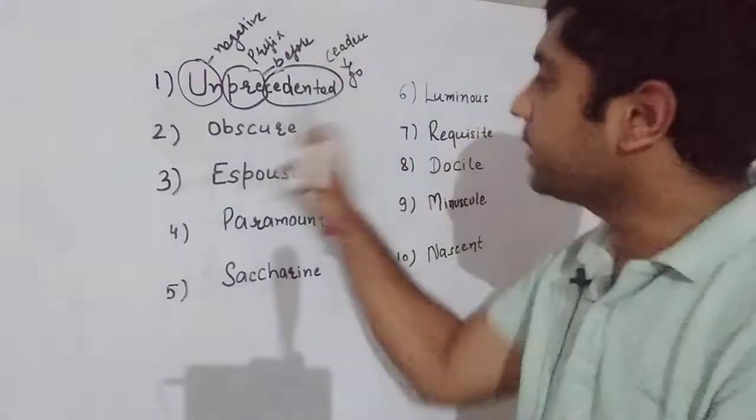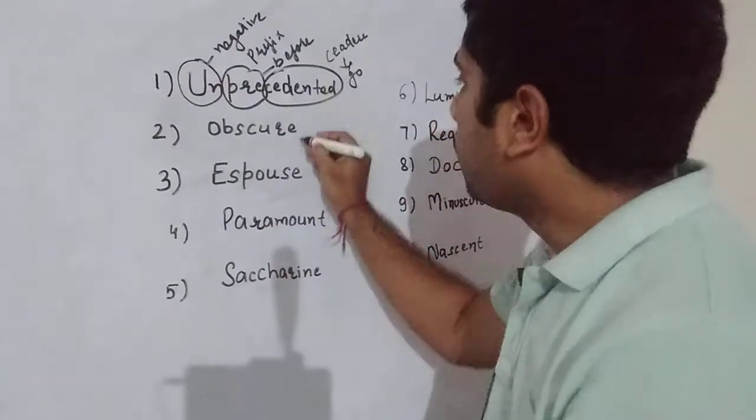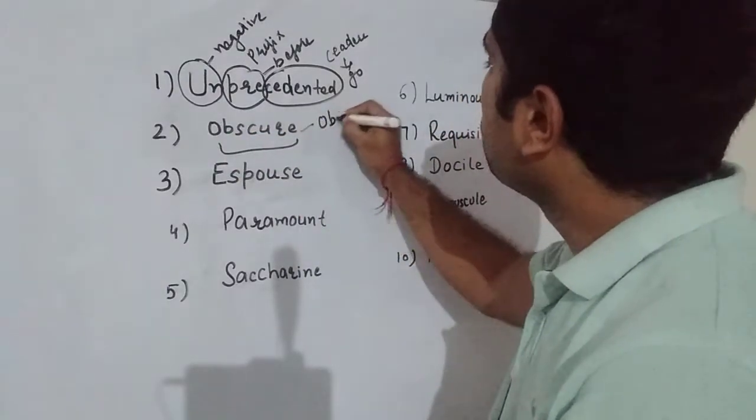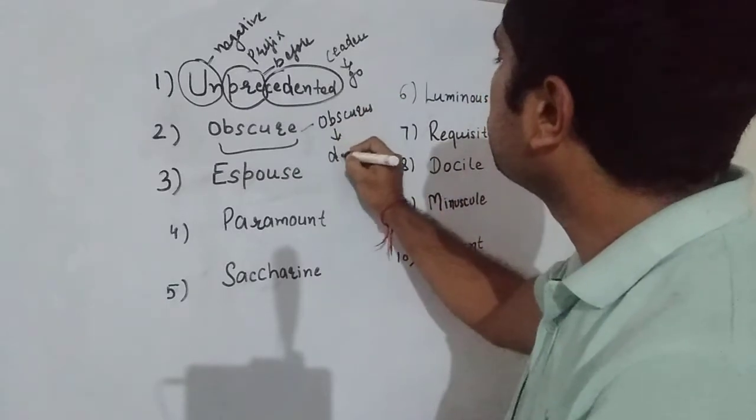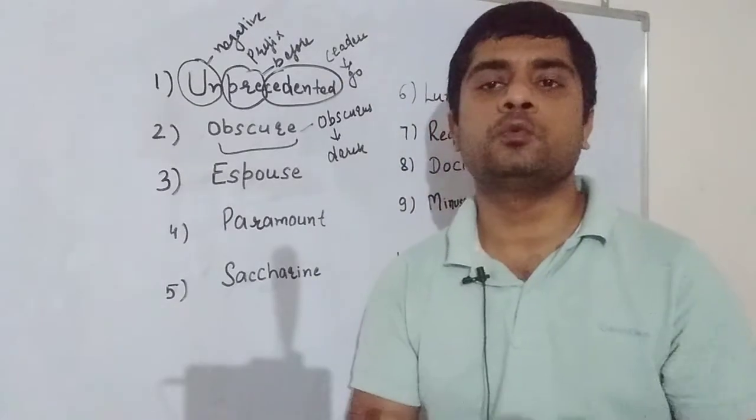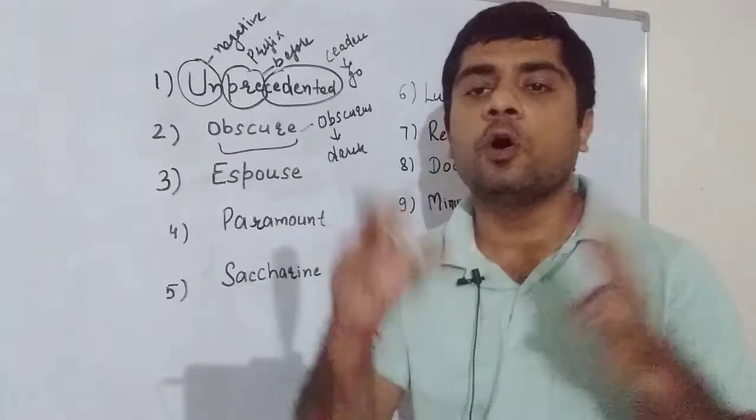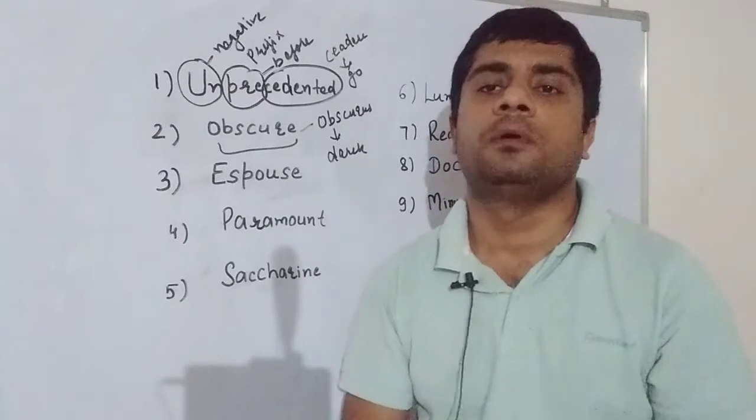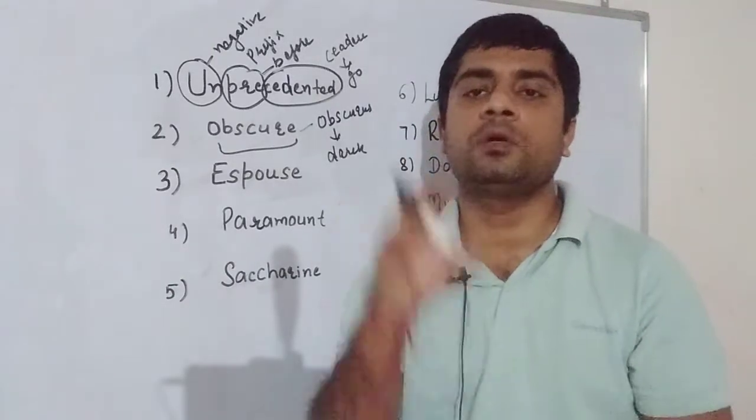Next word, obscure. Obscure aya hai Latin obscurus se. Iska matlab hota hai dark. So if you have dark, then you will not see it, it will be indistinct. So what is obscure? Indistinct, unclear, vague, which is aspasht.